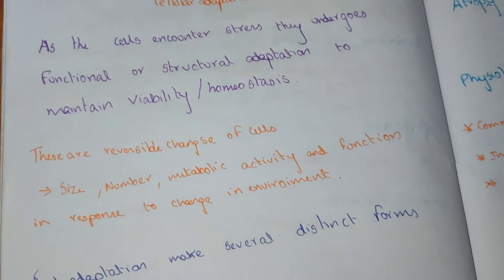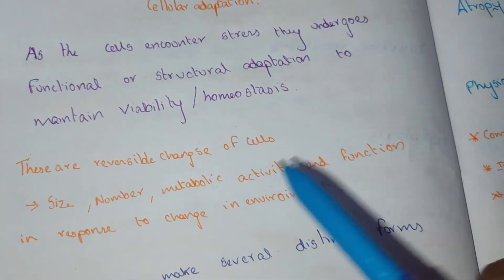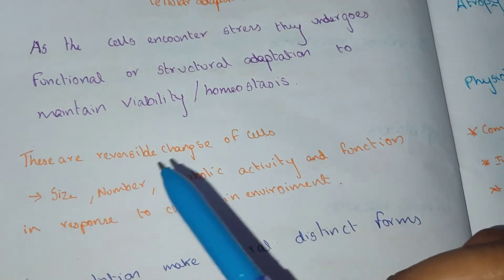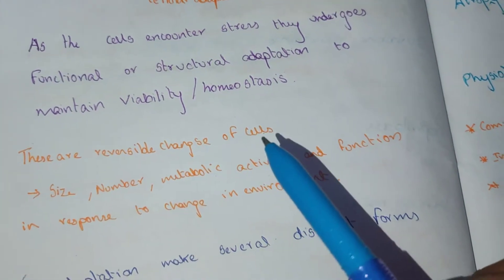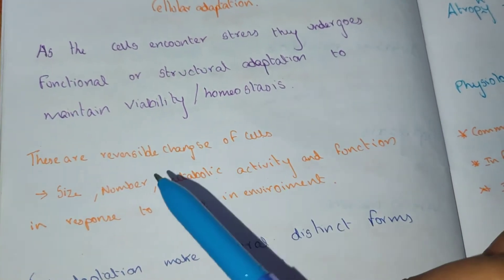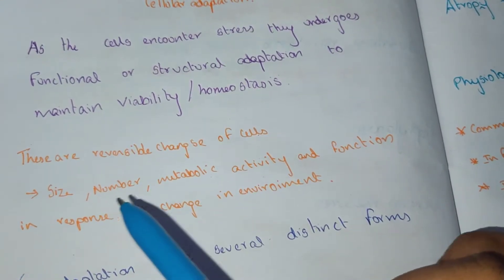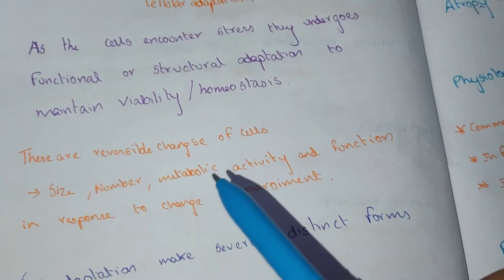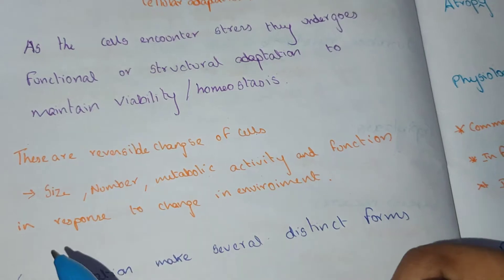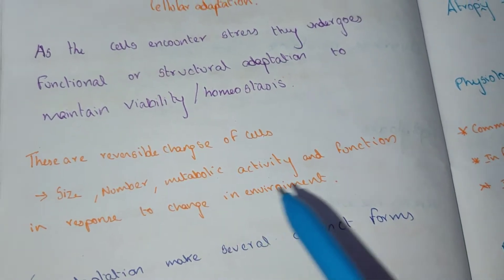Cellular adaptation is a reversible change of cells, involving changes in size, number, metabolic activity, and function in response to changes in the environment. Irreversible changes lead to cell death.